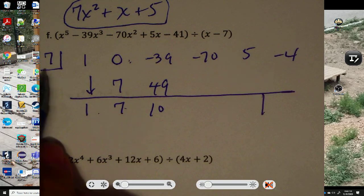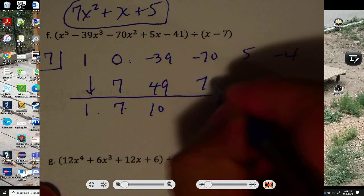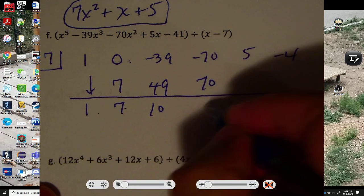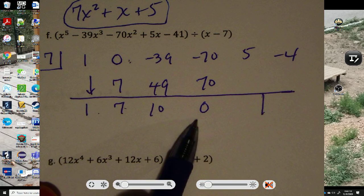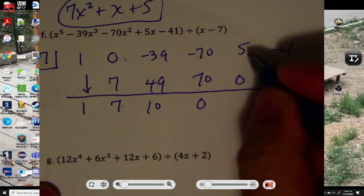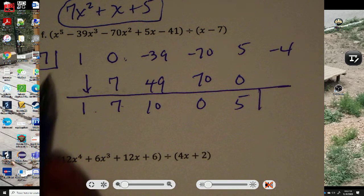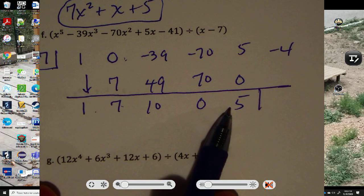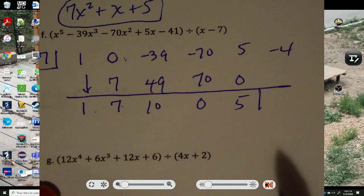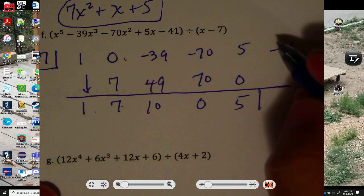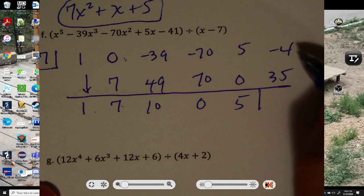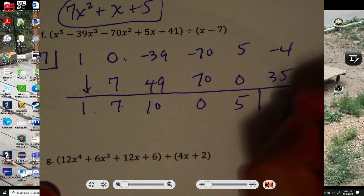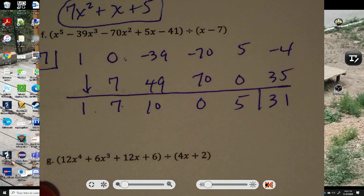Multiply. 7 times 10 is 70. Add. Negative 70 plus 70 is 0. Multiply. 7 times 0 is 0. 5 plus 0 is 5. 7 times 5 is 35. And then negative 4 plus 35 is 31.